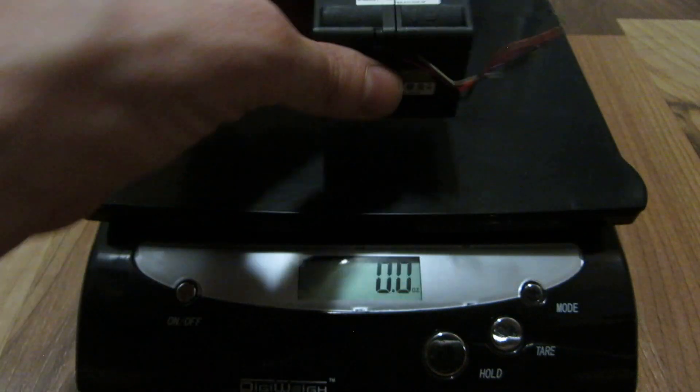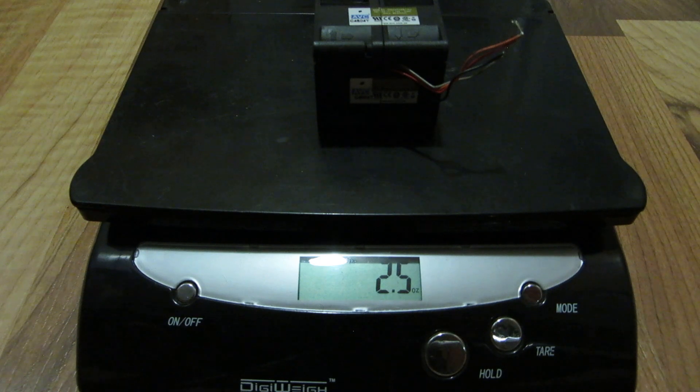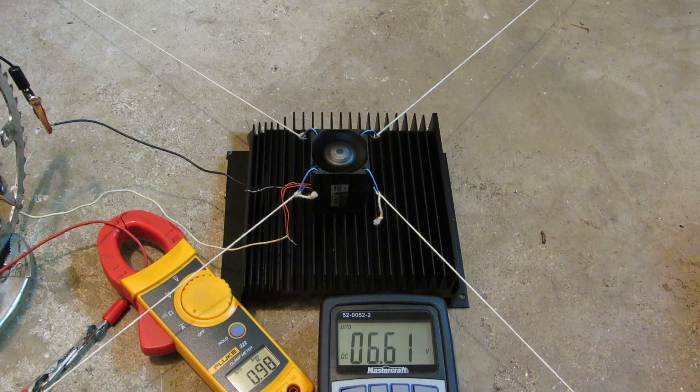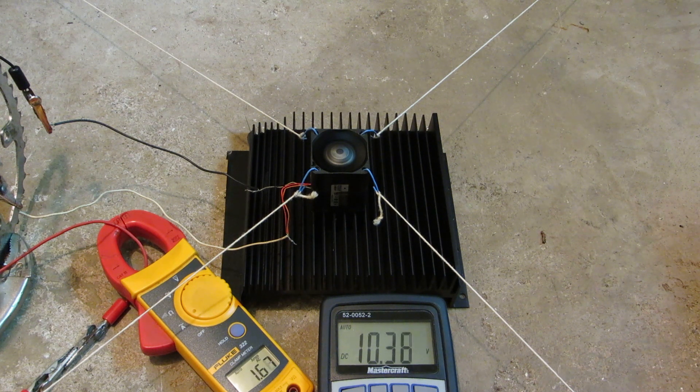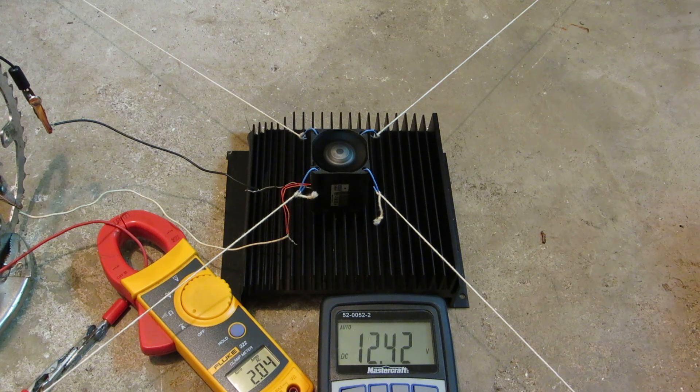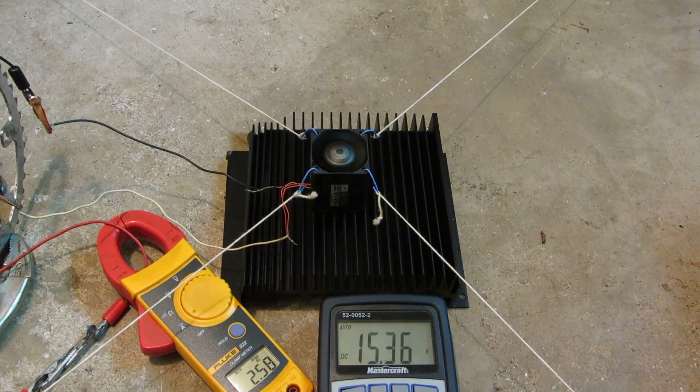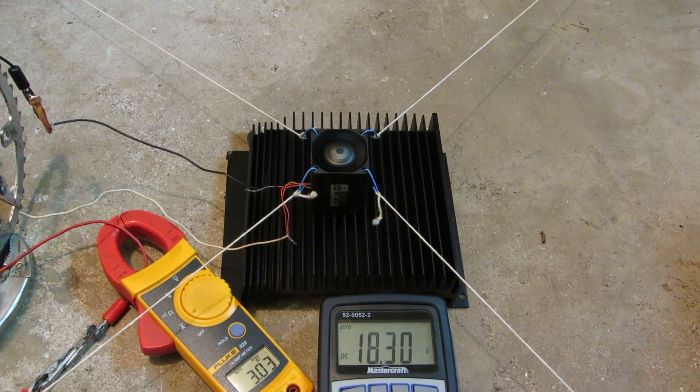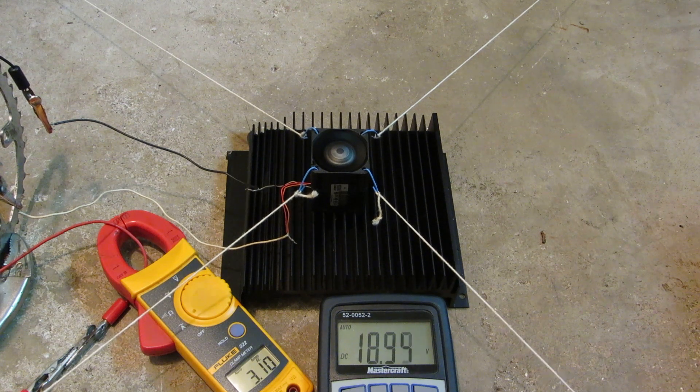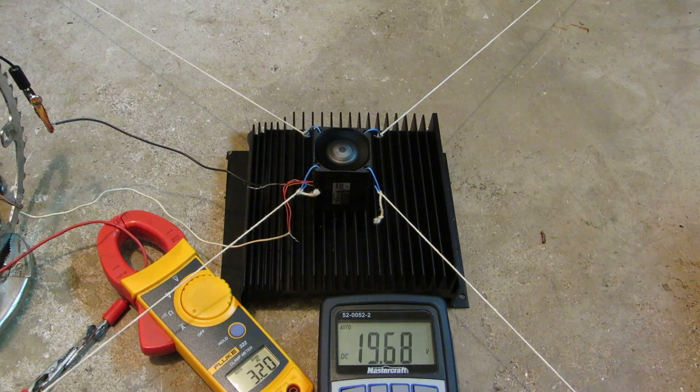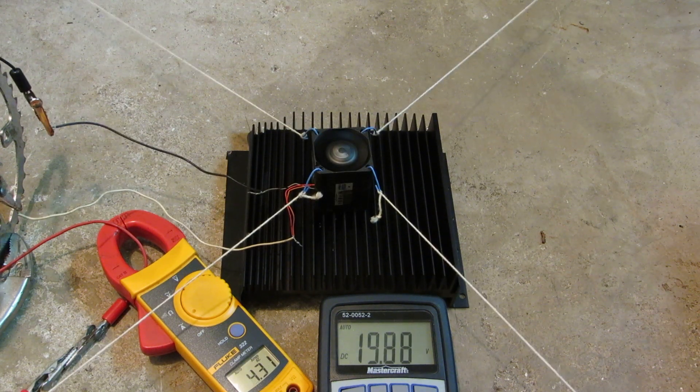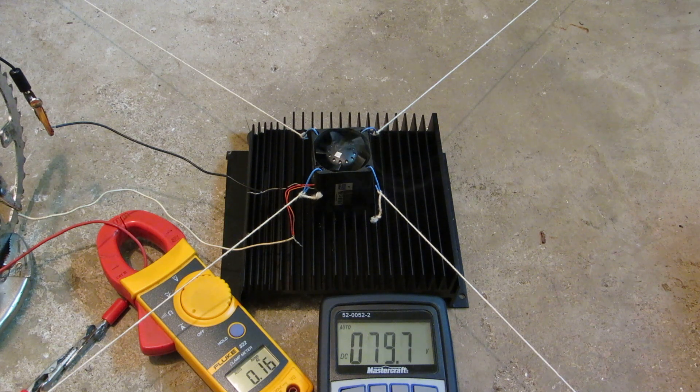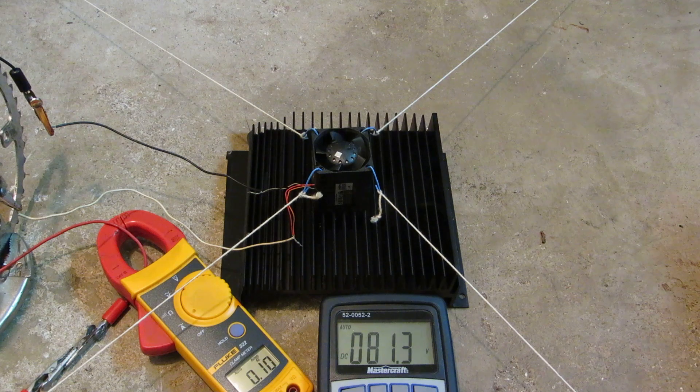AVC 1.14 amp push-pull, 2.5 ounces. Next up is the AVC rated at 1.14 amps. Here we go. Wow, what the heck? That was an odd way to go.